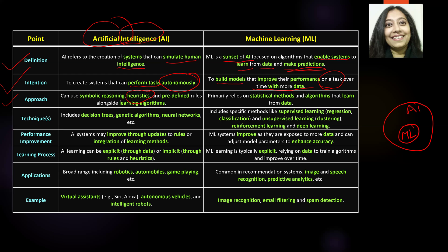You could have a whole video on heuristics — I'll create one if possible — but just keep that in mind. So one of the approaches for AI is heuristics. When it comes to ML, it primarily relies on statistical methods and algorithms that can learn from data. Remember, ML is all about data.